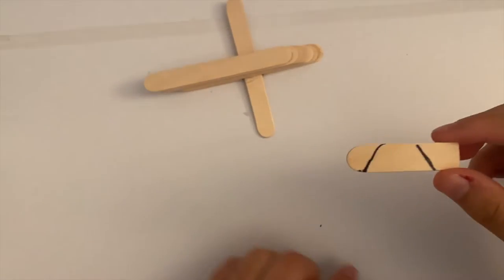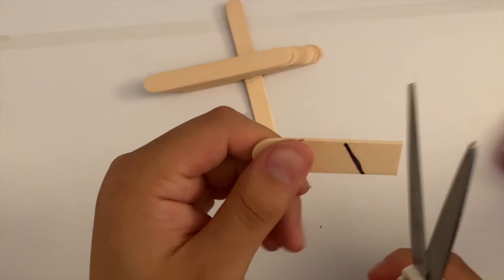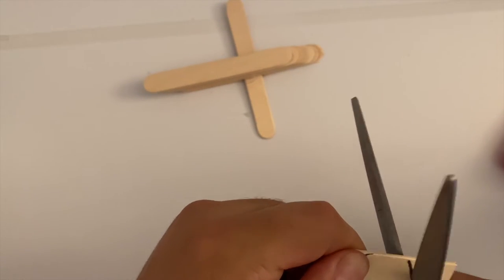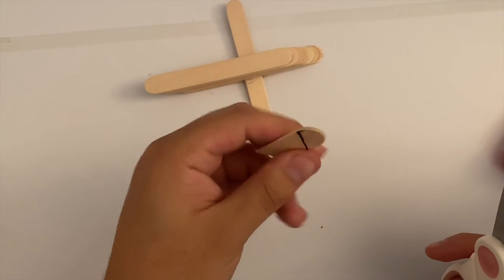Now with one of the half sticks that you have just cut, go ahead and make some indicators like I have done here. Then go on and make some cuts on them as shown.